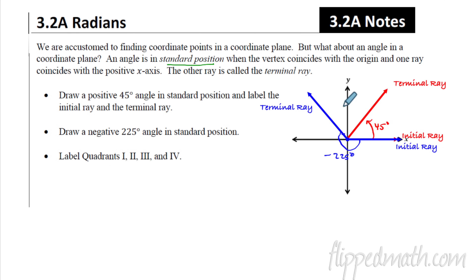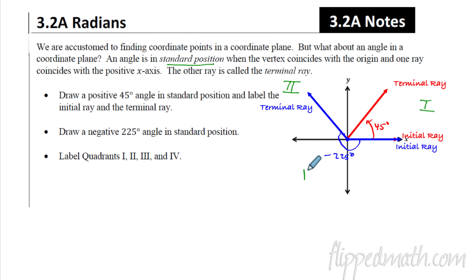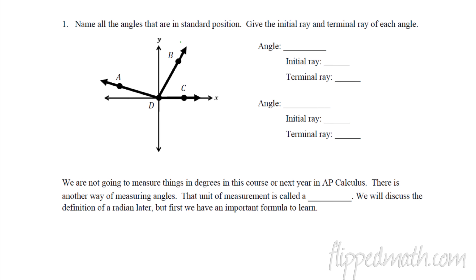You might wonder why the first quadrant is where it is — that has to do with angles. When everything is positive you end up in quadrant one. Going counterclockwise: quadrant two is next, then quadrant three is down here, and lastly quadrant four. So we've drawn a positive 45-degree angle up into quadrant one, a negative 225-degree angle, and labeled all our quadrants.